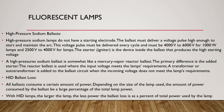High pressure sodium ballast: a high pressure sodium lamp does not have a starting electrode. The ballast must deliver a voltage pulse high enough to start and maintain the arc. This voltage pulse must be delivered every cycle — 4,000 to 6,000 volts for 1,000-watt lamps, and 2,500 to 4,000 volts for smaller lamps. The starter (igniter) is a device inside the ballast that produces the high starting voltage. A high pressure sodium ballast is similar to a mercury reactor ballast, with the primary difference being the added starter. A transformer or autotransformer is added to the ballast circuit when the incoming voltage does not meet the lamp's requirements.